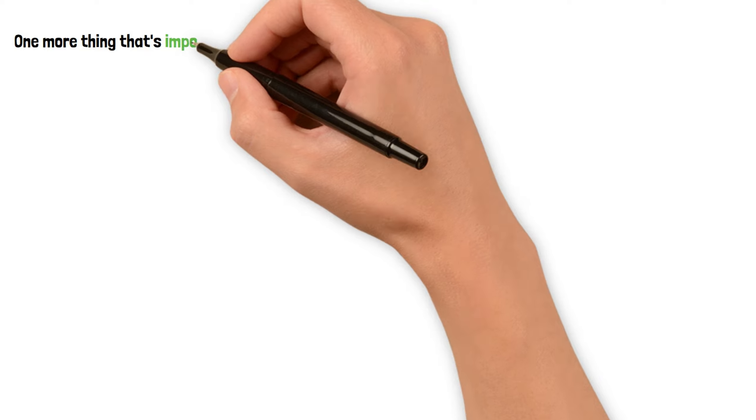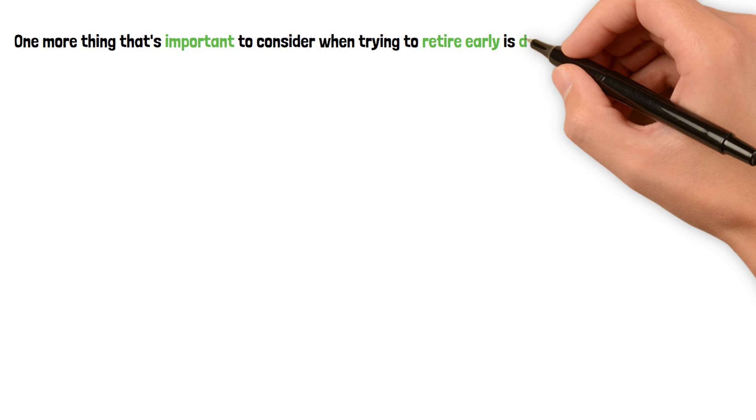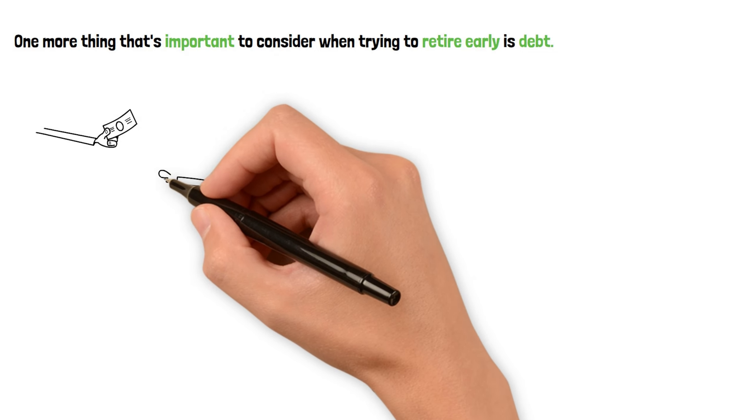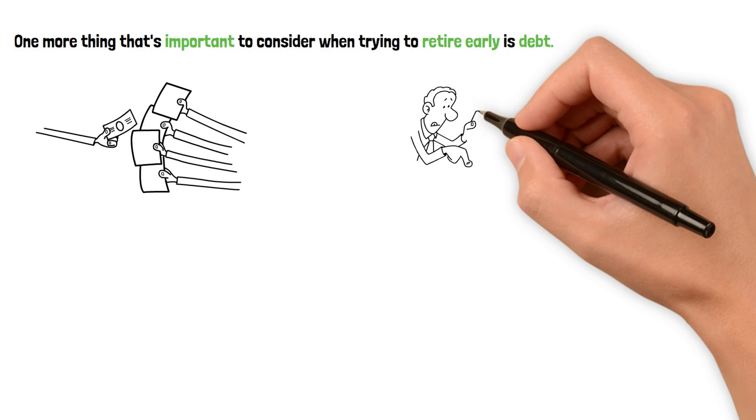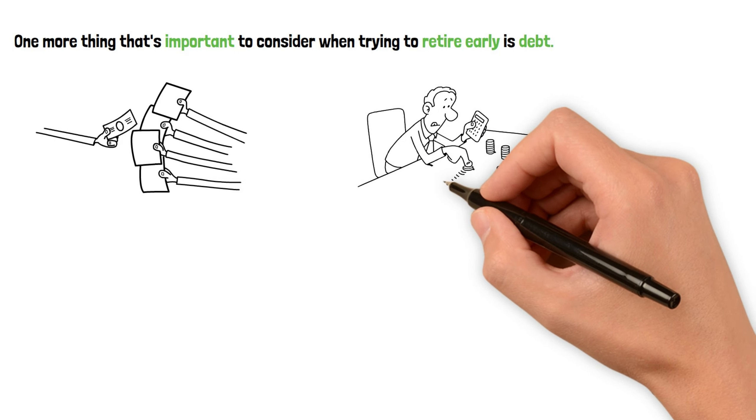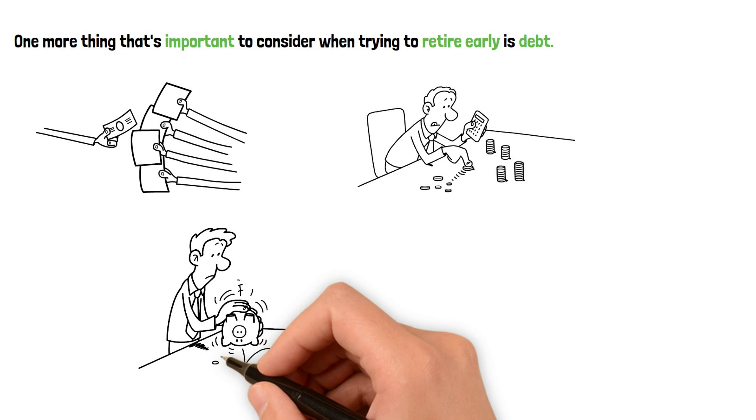One more thing that's important to consider when trying to retire early is debt. If you have a lot of debt, it's going to be much harder to save and invest. So try to pay off any high-interest debt as quickly as possible. This might mean making some sacrifices in the short term, but it will pay off in the long run.